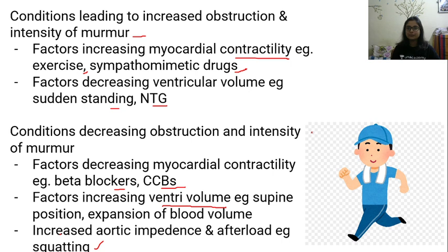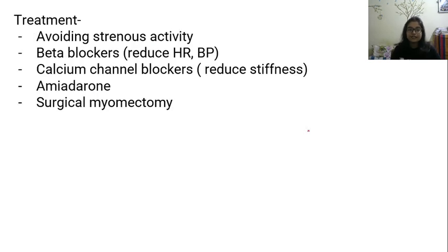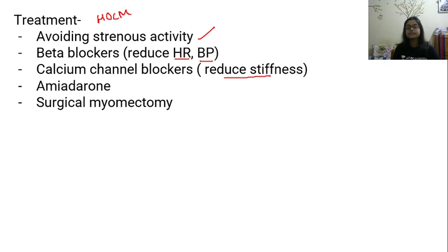Treatment options for hypertrophic obstructive cardiomyopathy include: avoiding strenuous activity, beta blockers to reduce heart rate and blood pressure, calcium channel blockers to reduce stiffness of the heart, amiodarone as an anti-arrhythmic drug if arrhythmia develops, and as a last choice, surgical myomectomy — where the extra hypertrophic part of the interventricular septum is surgically removed.